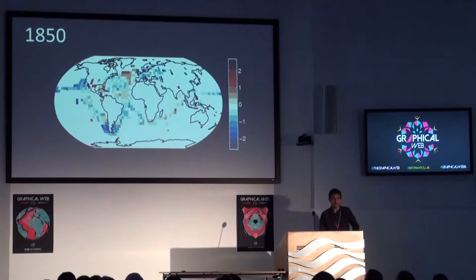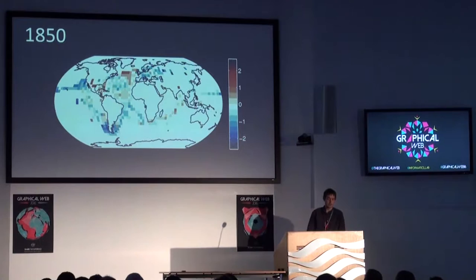If we look at 1850, there are lots of gaps. You can see observations over Europe and parts of North America, and lots of ships sailing around. There's no Panama Canal or Suez Canal, so ships had to sail around the southern capes of the continents — that's why we have observations in those regions.